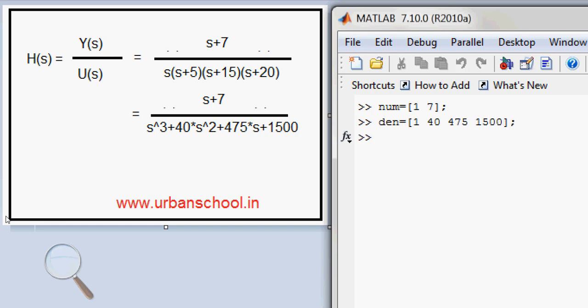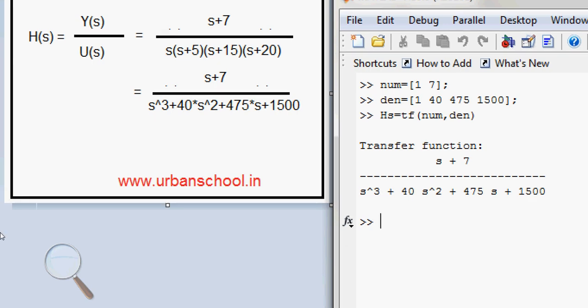So now I need to define my function here. It is H(s) which equals to transfer function of my numerator comma denominator. So it will give me a transfer function. You can see here it is exactly matched with my original transfer function which I solved here.